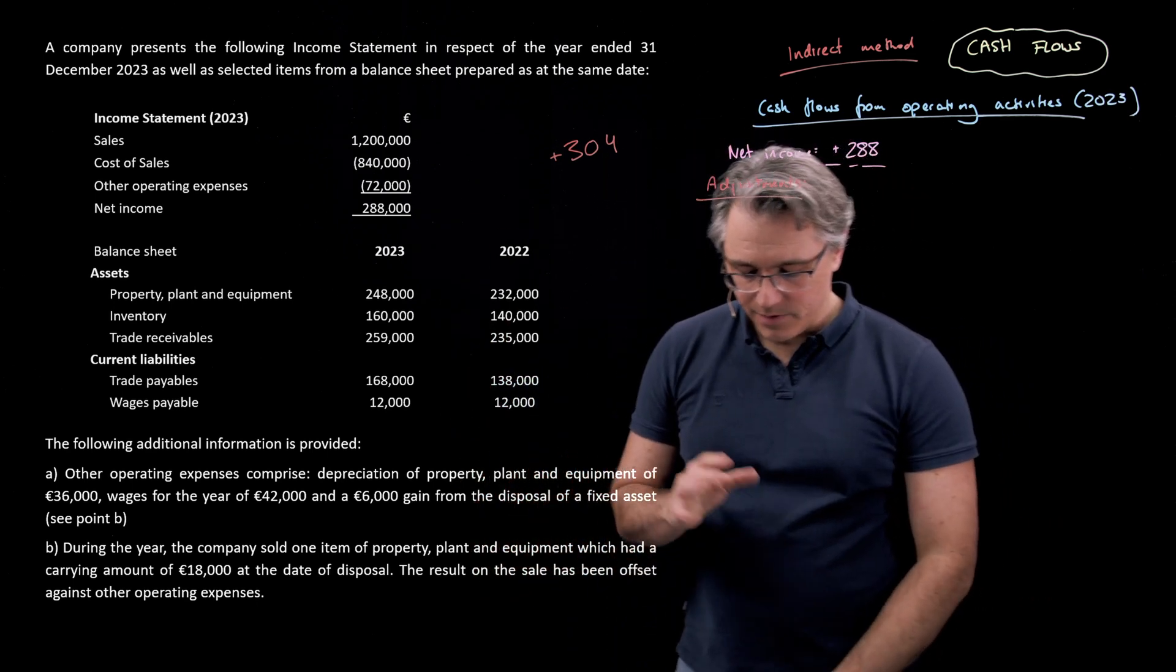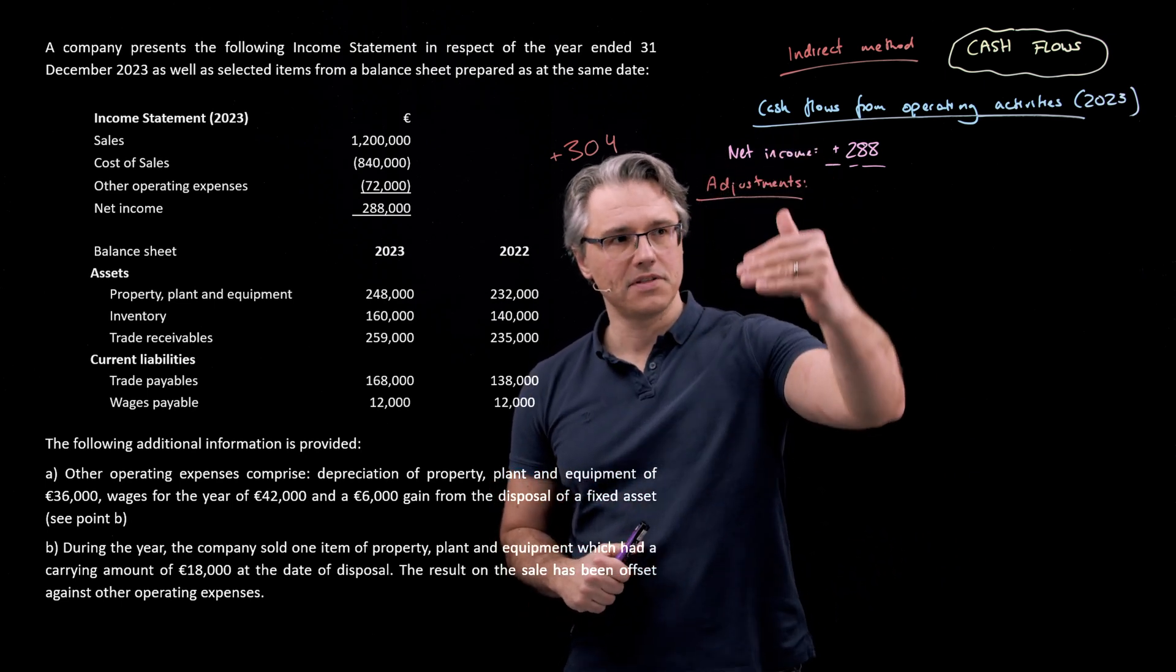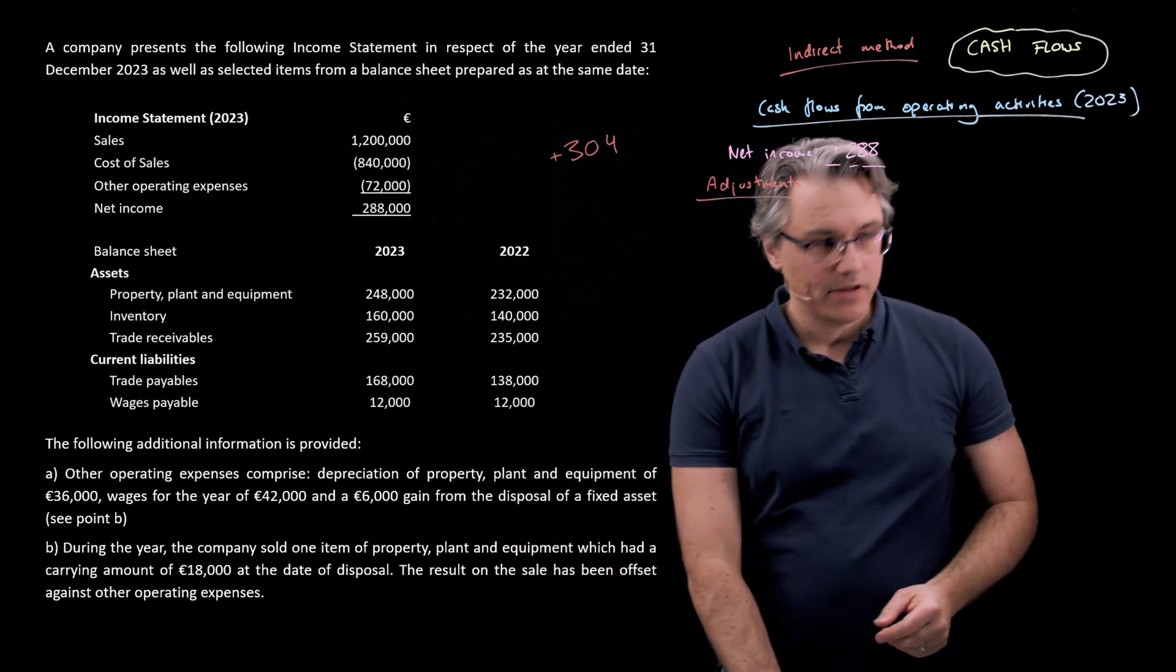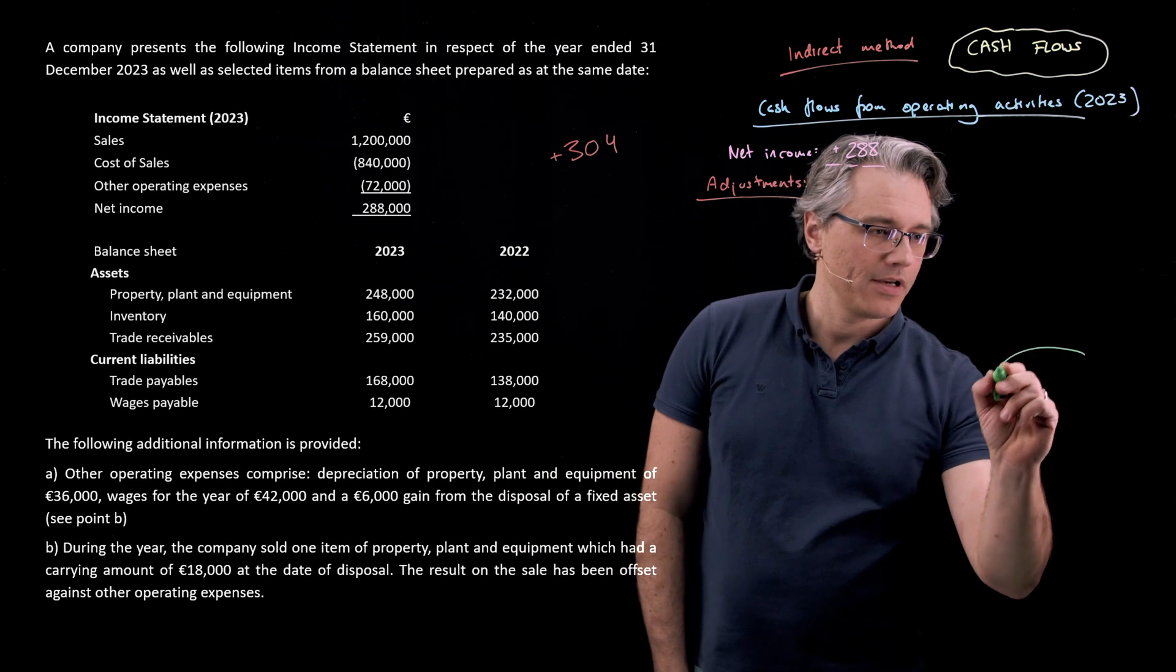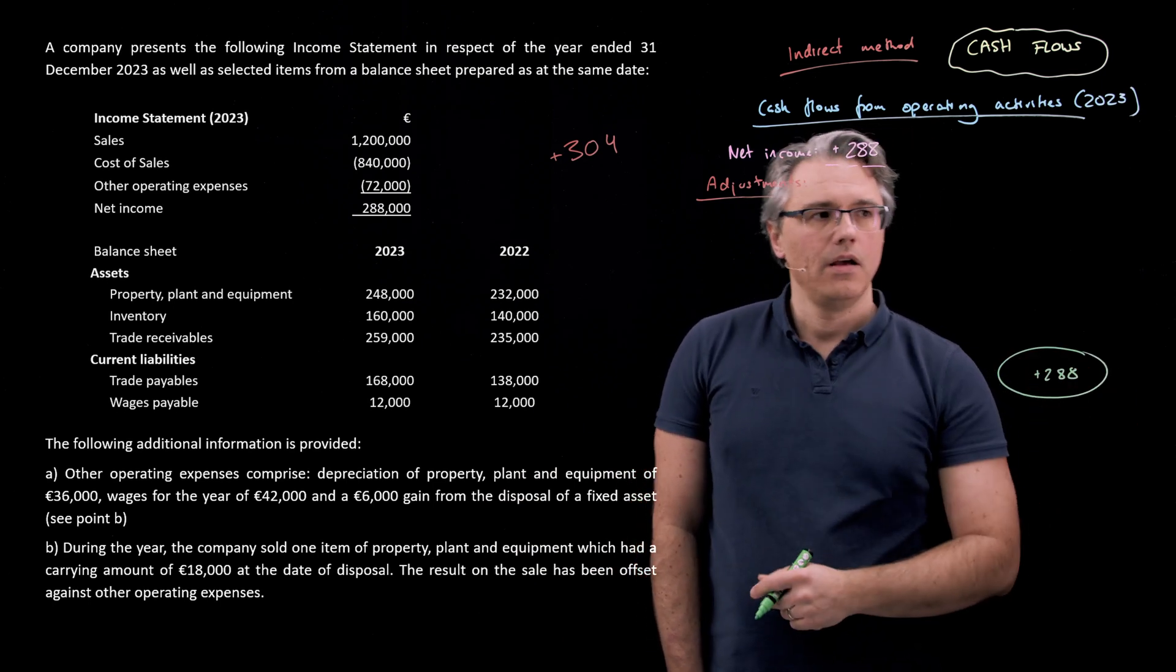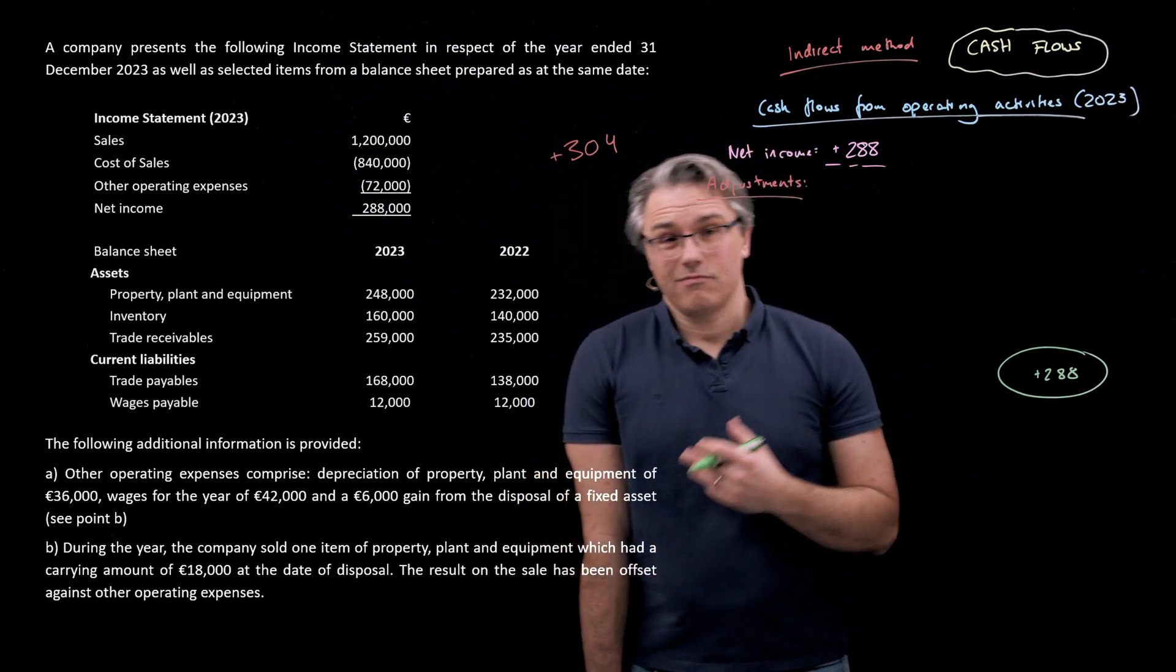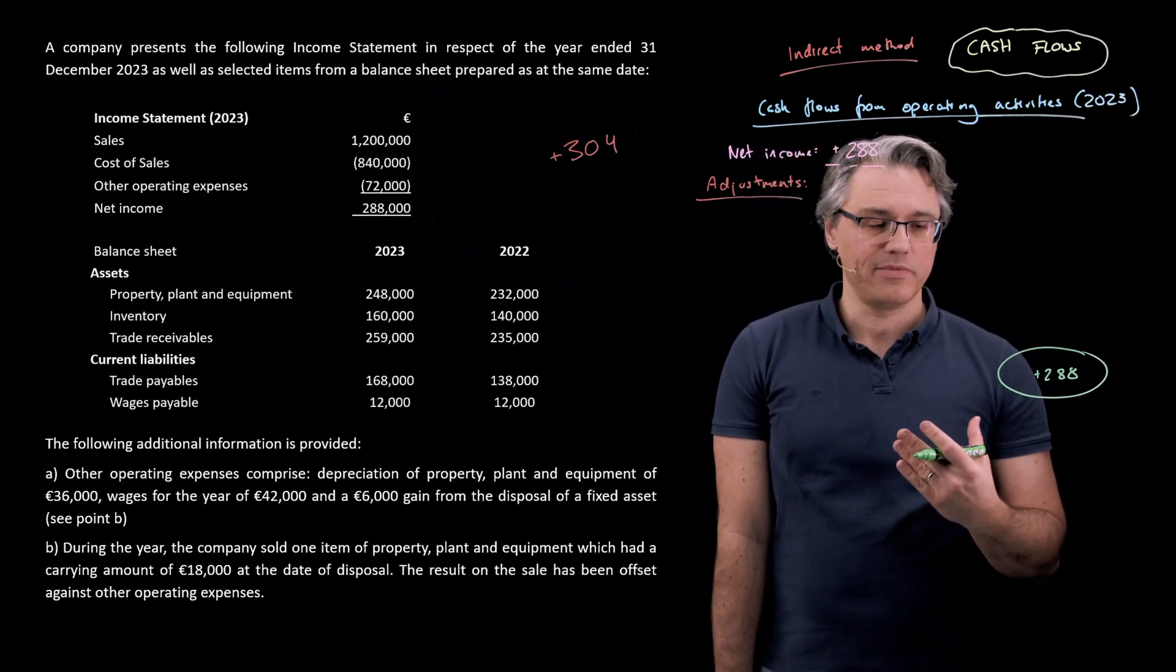I'm going to leave some space here to introduce these adjustments, but on the side I'm going to write the result plus 288,000, identify its component parts, and then check out what's wrong with them from a cash flow perspective.